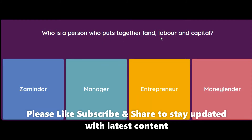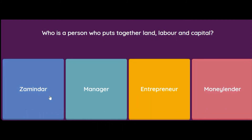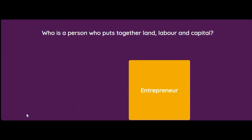Who is a person who puts together land, labor and capital? Zamindar, manager, money lender, or entrepreneur? The answer for this is entrepreneur.